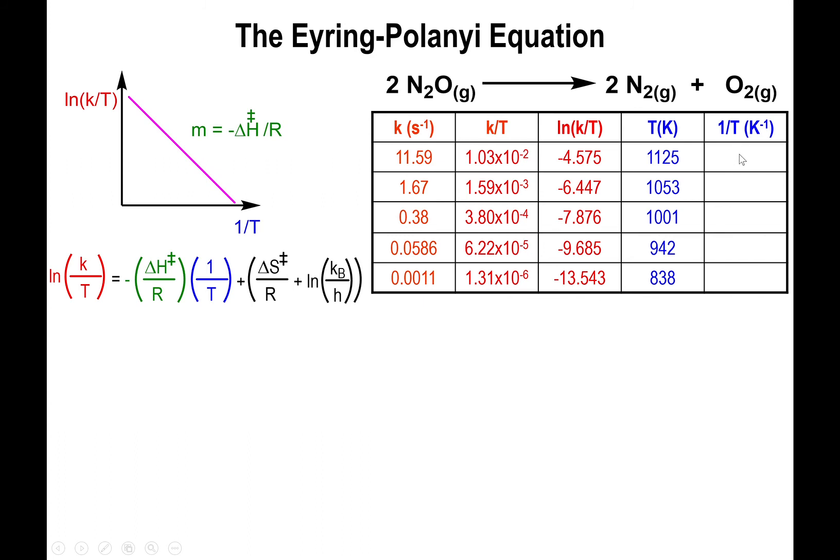Take your temperature and look at the inverse of those temperatures. Now plot the ln of k over T versus 1 over T. You will get a new line with a new slope and a new y-intercept.